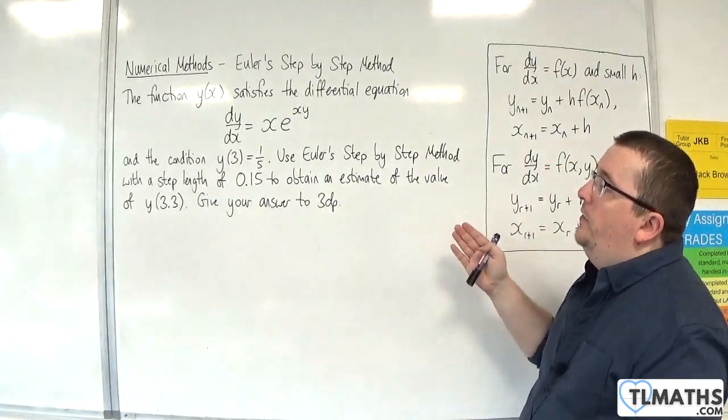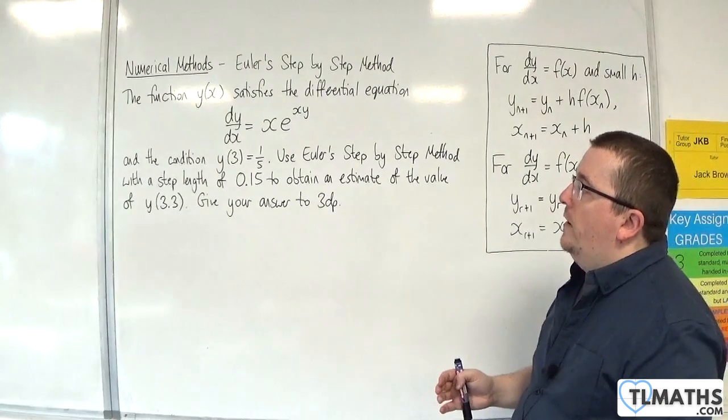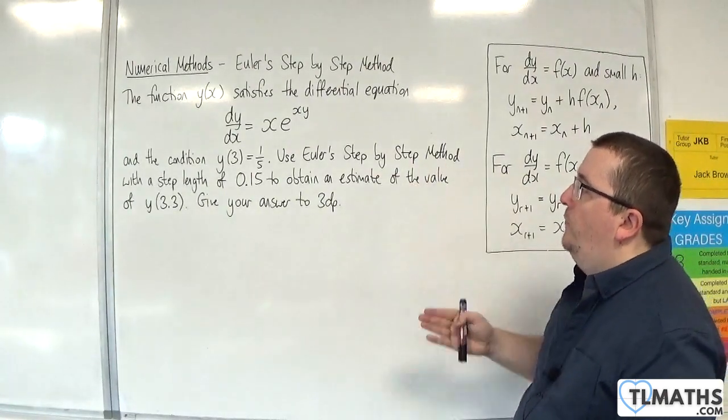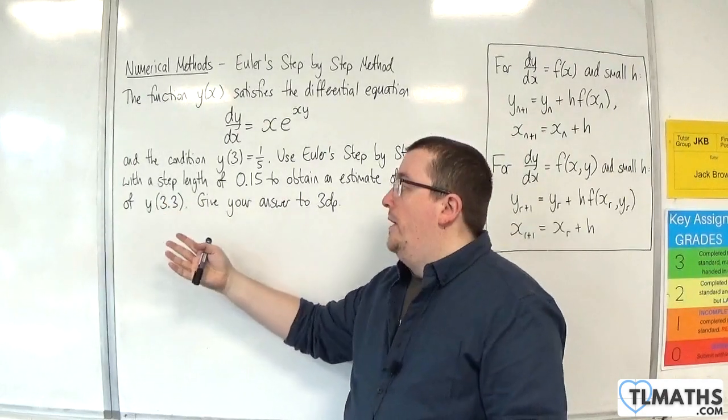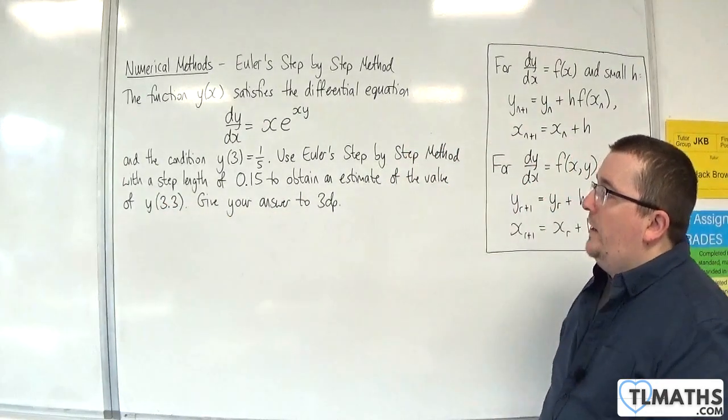Use Euler's step-by-step method with a step length of 0.15 to obtain an estimate of the value of y of 3.3. So when x is 3.3, what is y? Give your answer to three decimal places.